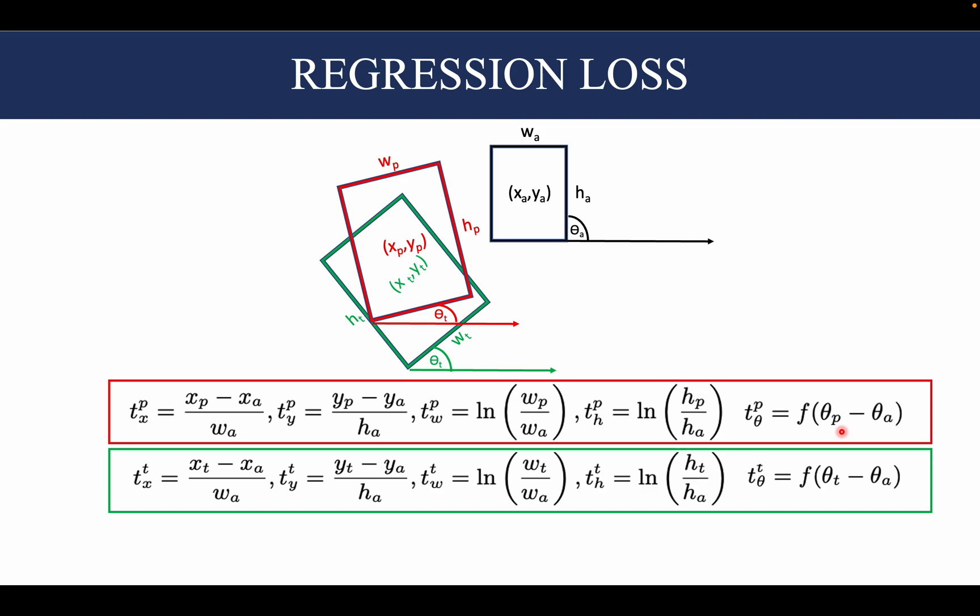These parameters are also computed for the ground truth bounding box, and now we are in a position to compute the regularization loss, which is an ln norm for all these five parameters.